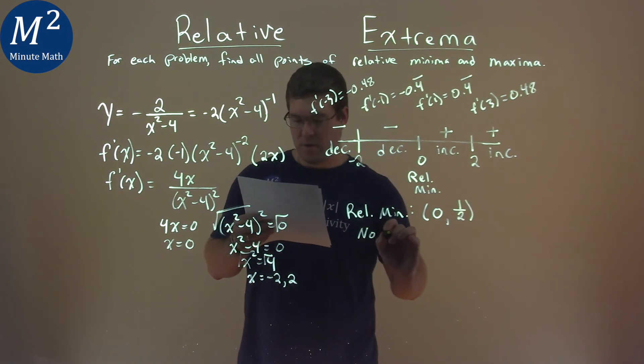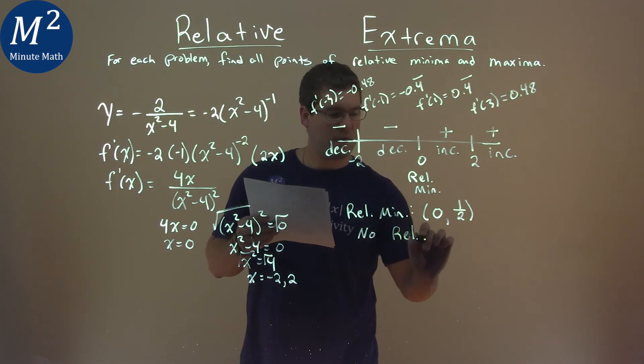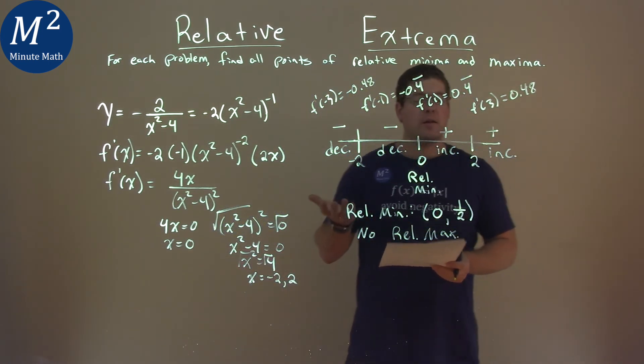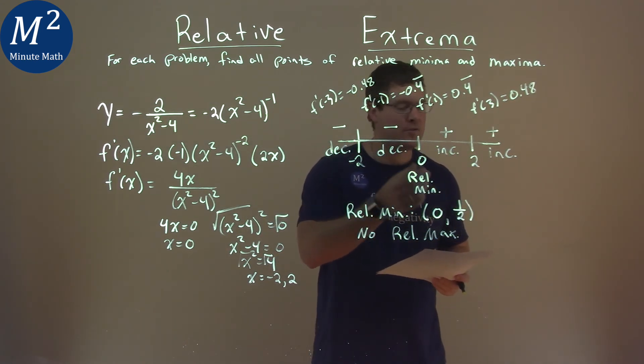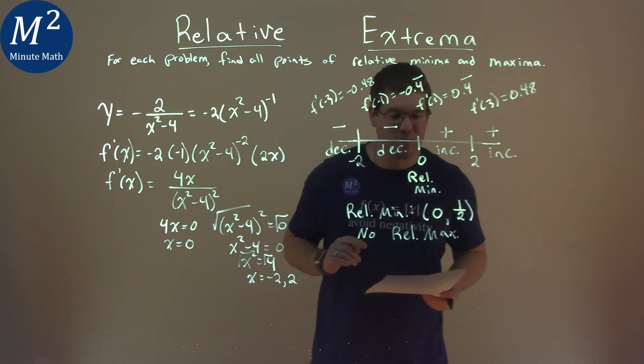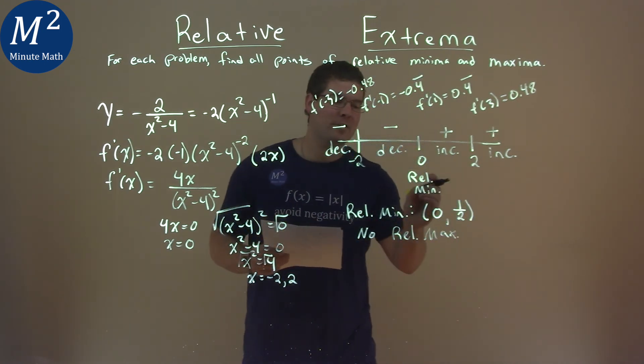So we have no relative max. So our final answer here is we have a relative minimum at 0 comma one-half, the coordinate point, and we have no relative maximum.